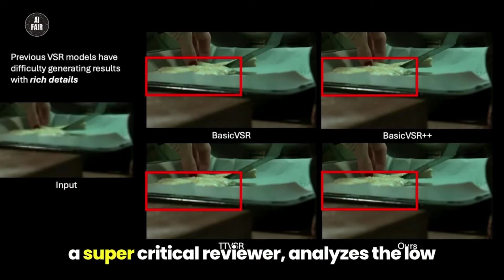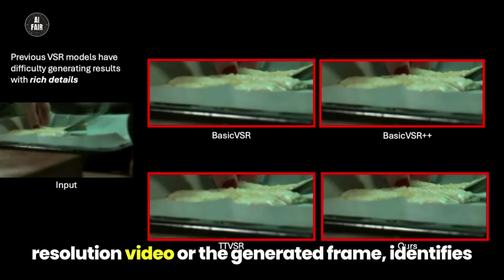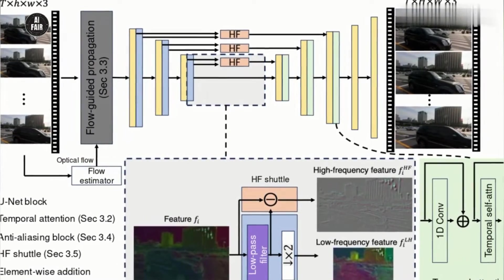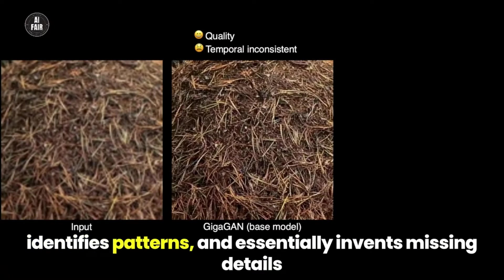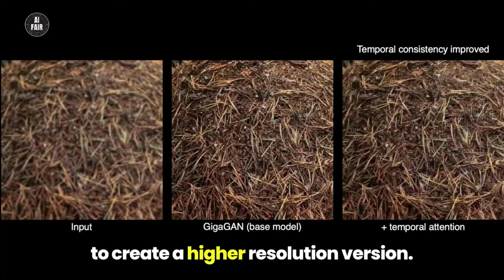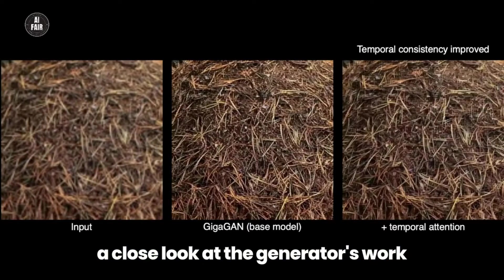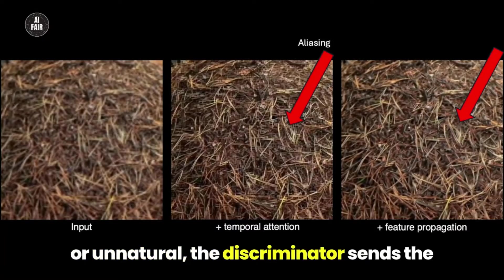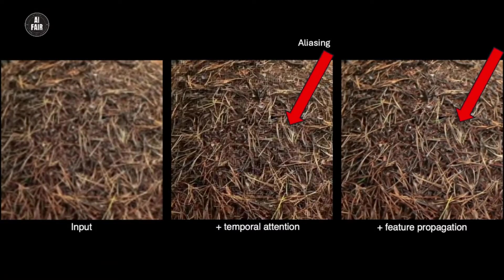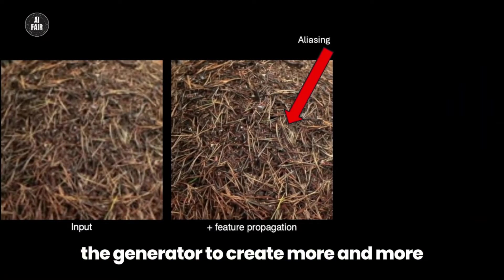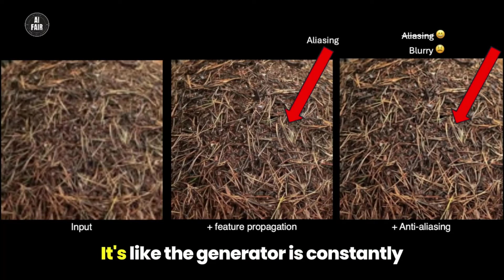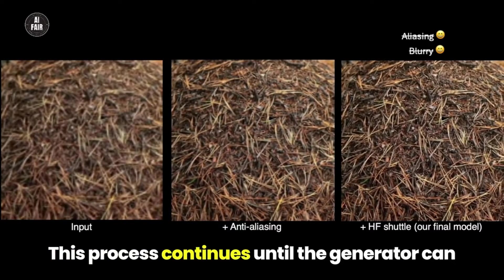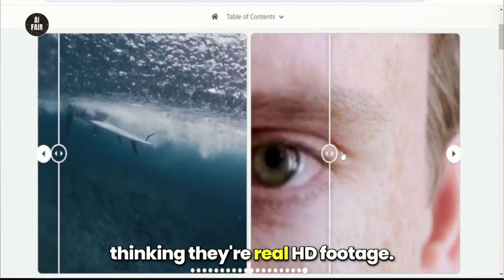The other model, the discriminator, acts as a super-critical reviewer. The generator analyzes the low-resolution video, identifies patterns, and essentially invents missing details to create a higher-resolution version. The discriminator, at the same time, takes a close look at the generator's work and compares it to real HD videos. If the generated frames look fake or unnatural, the discriminator sends the generator back to the drawing board. This back-and-forth competition keeps pushing the generator to create more and more realistic, detailed versions of the video — constantly learning and improving its artistic skills based on the discriminator's feedback — until the generator can create frames that fool the discriminator into thinking they're real HD footage.